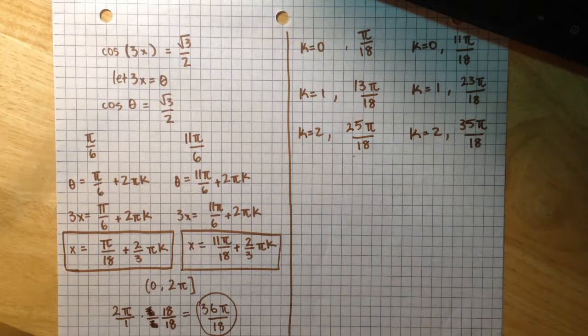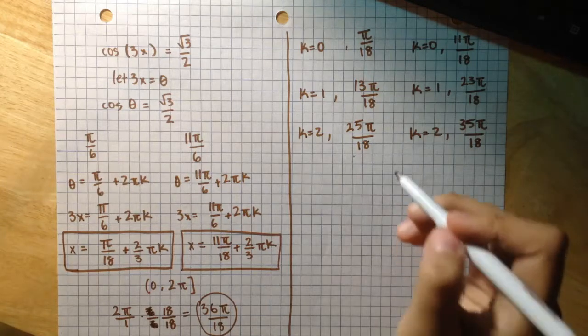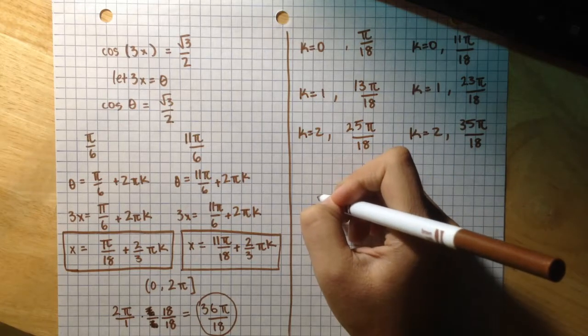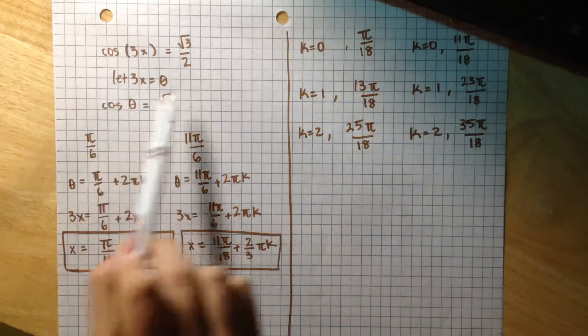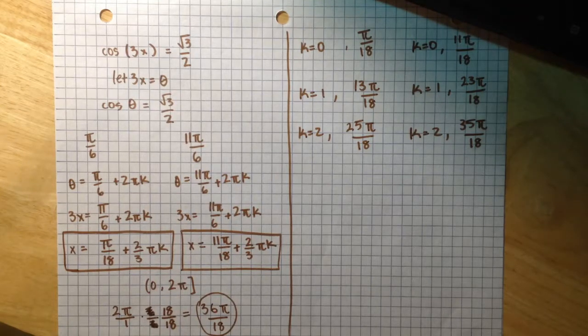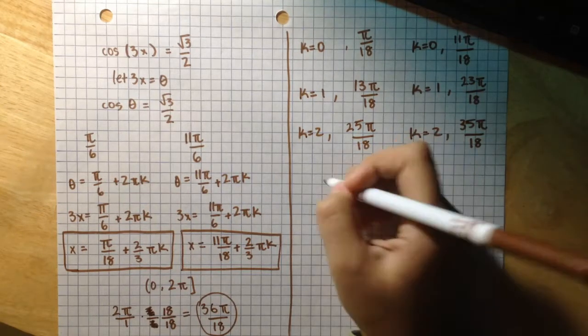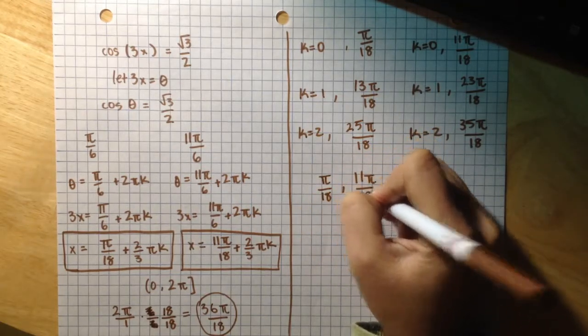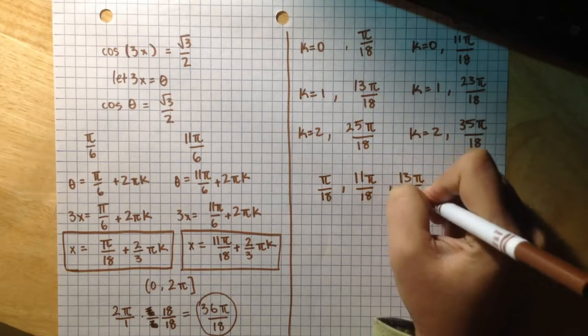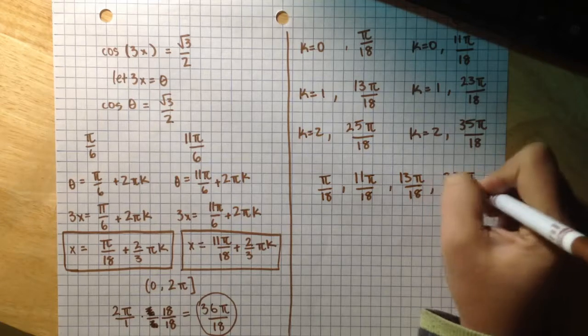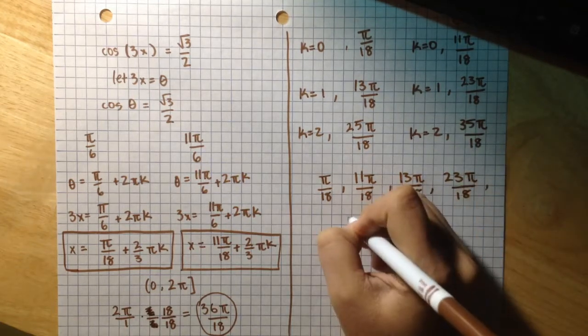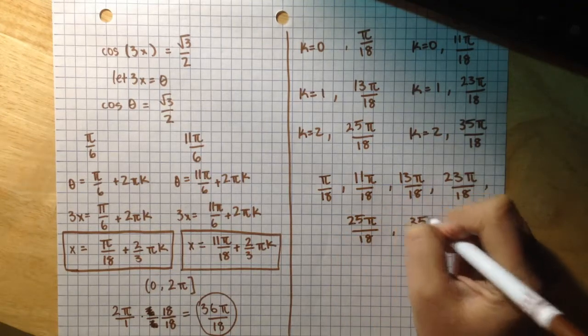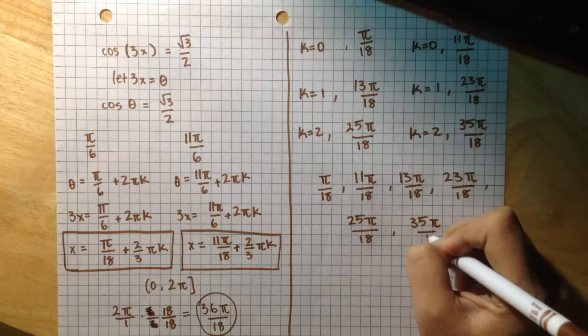So when we are going to list these solutions, let's list them in a comma-separated list. So the values of this equation in this interval to 2π are: π over 18, 11π over 18, 13π over 18, 23π over 18, 25π over 18, and 35π over 18.